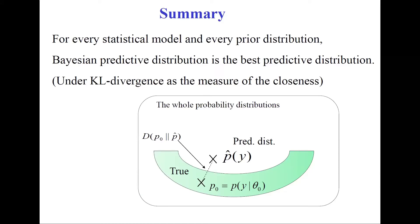Let's summarize this section. For every statistical model and every prior distribution, the Bayesian predictive distribution is the best predictive distribution in terms of average risk. This is the famous result by Aitchison 1975. In the next lecture, Part 2, we consider some applications to quantum information science. This is the end of the lecture, Part 1.